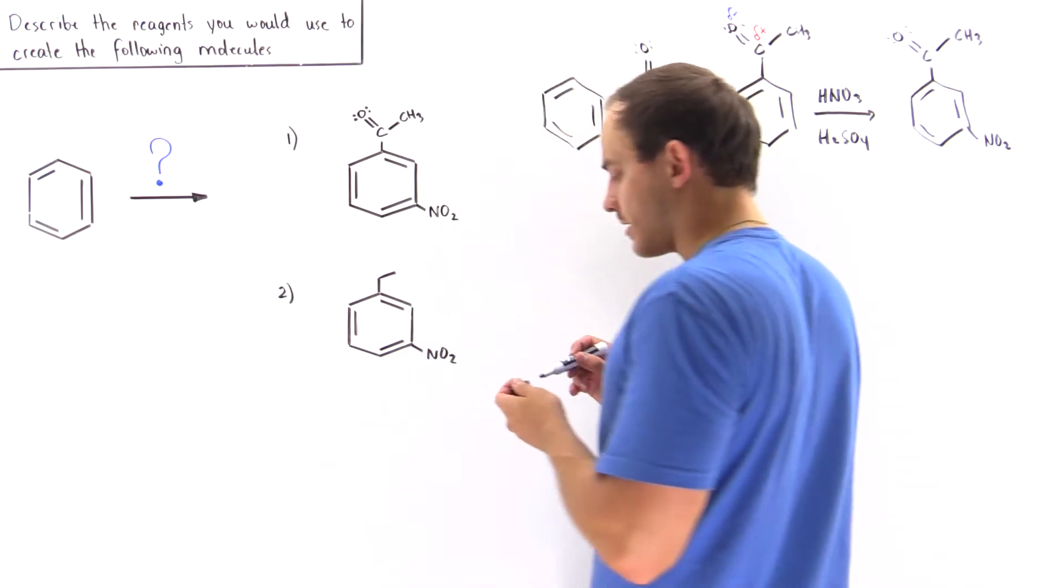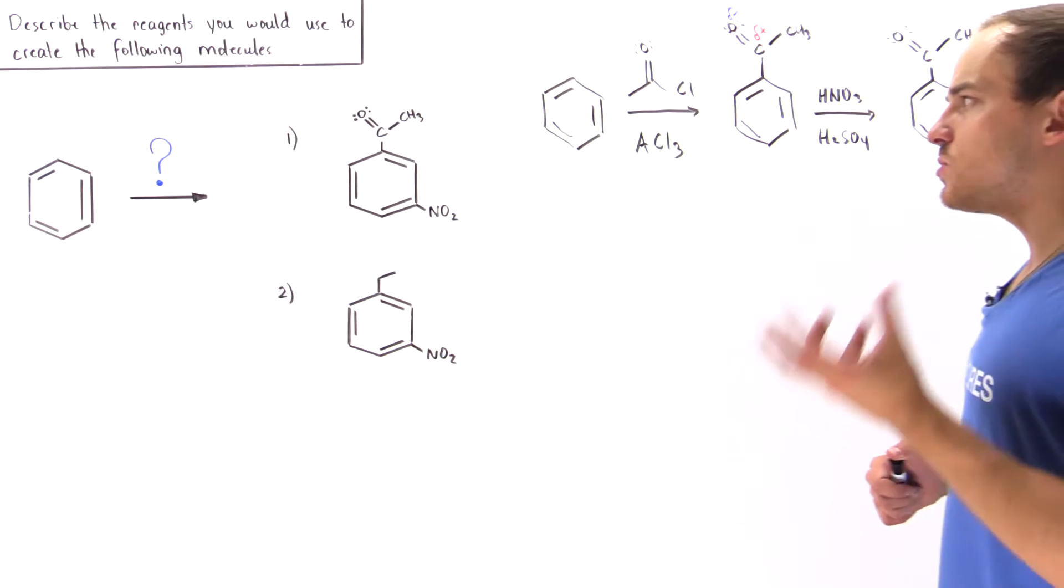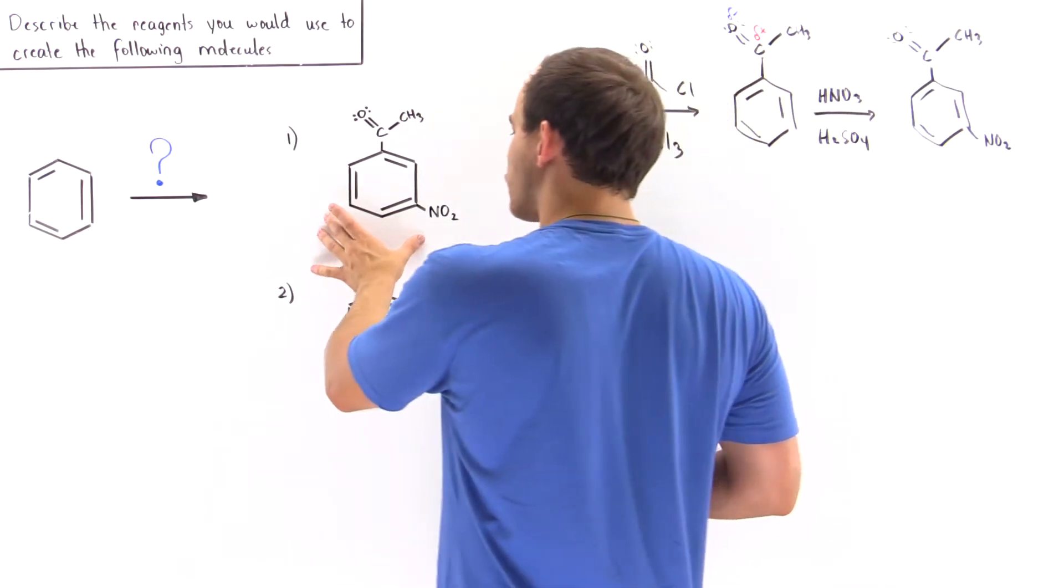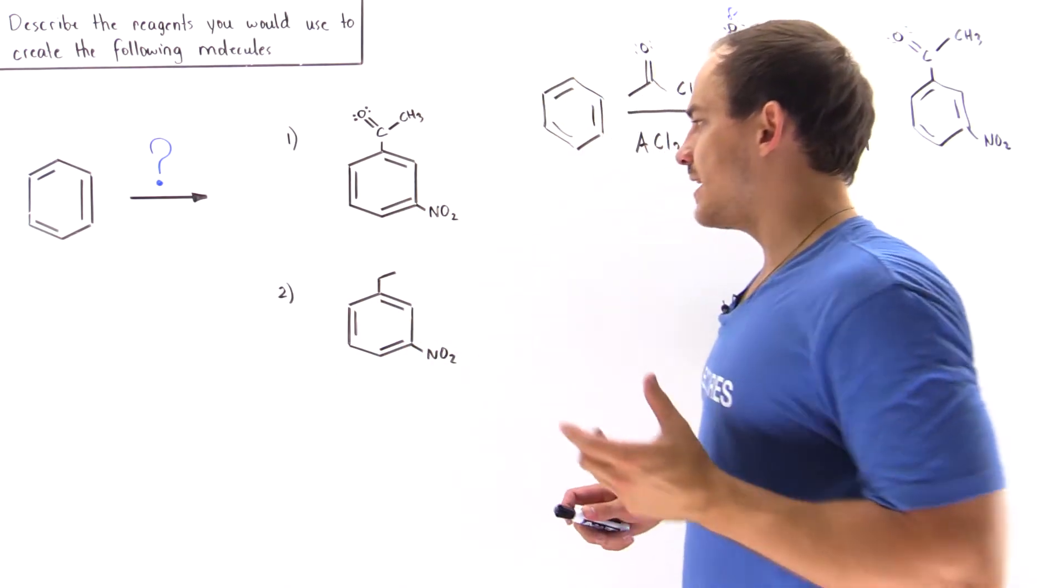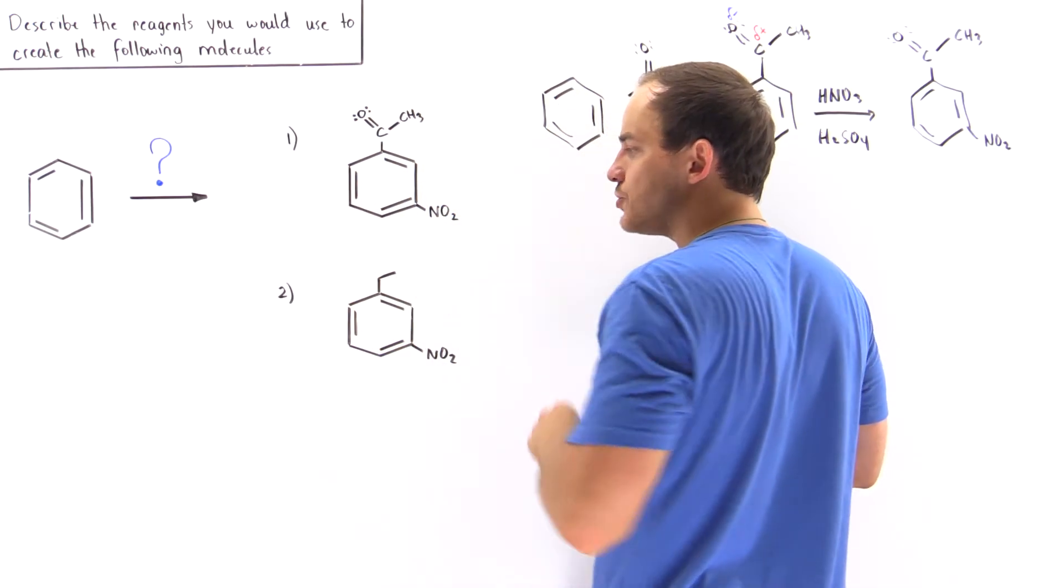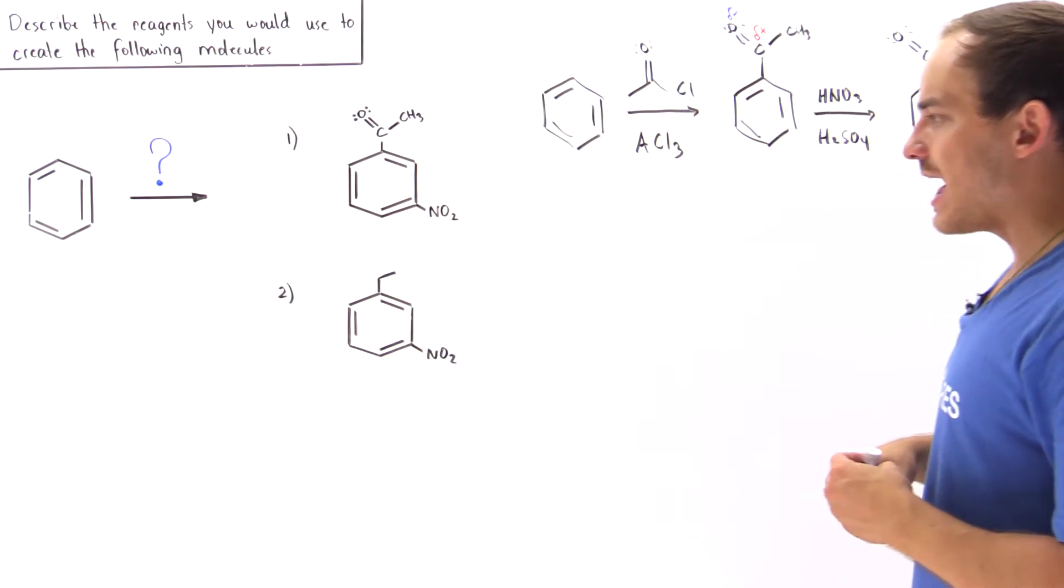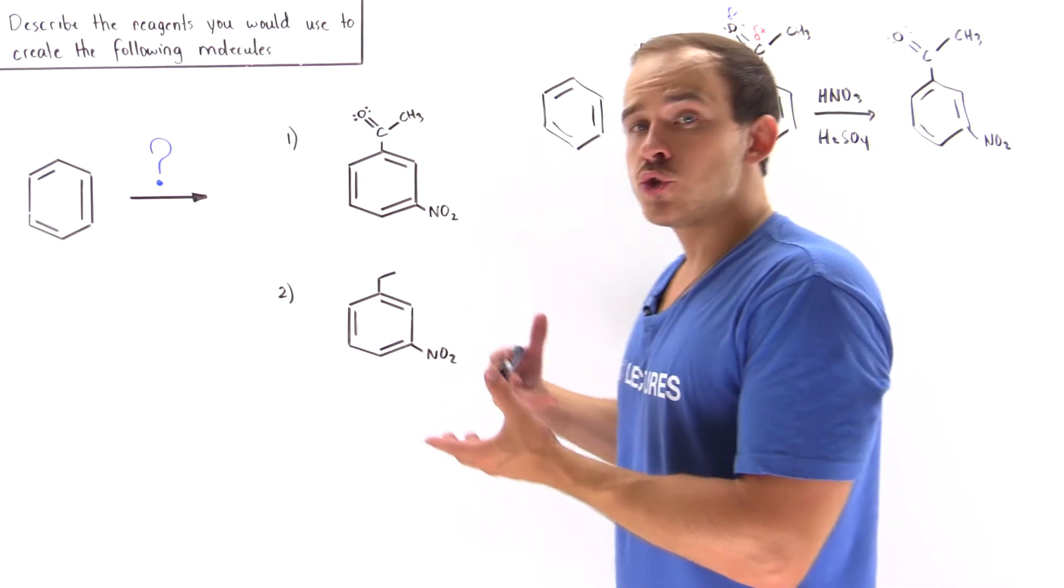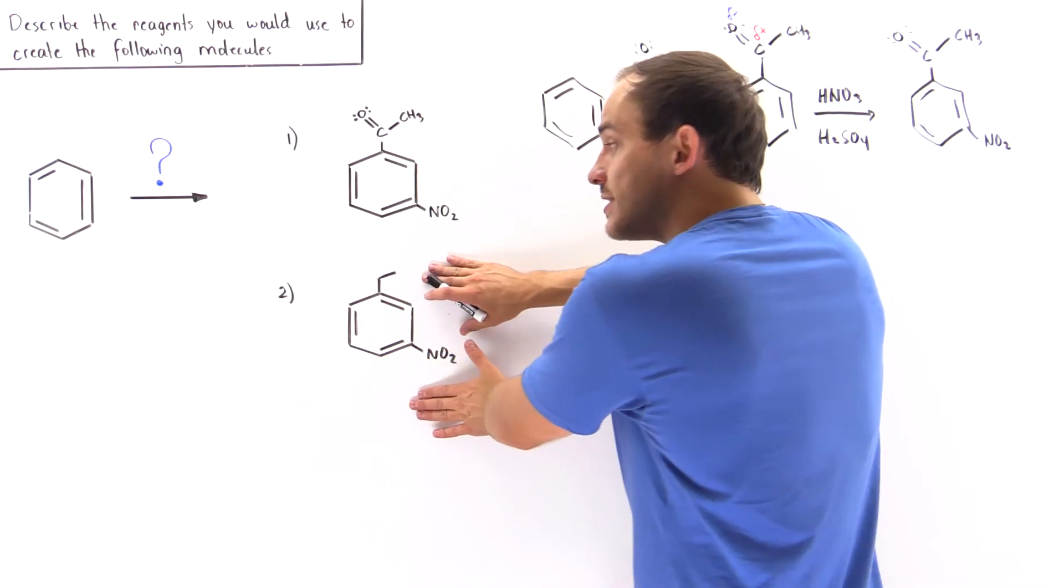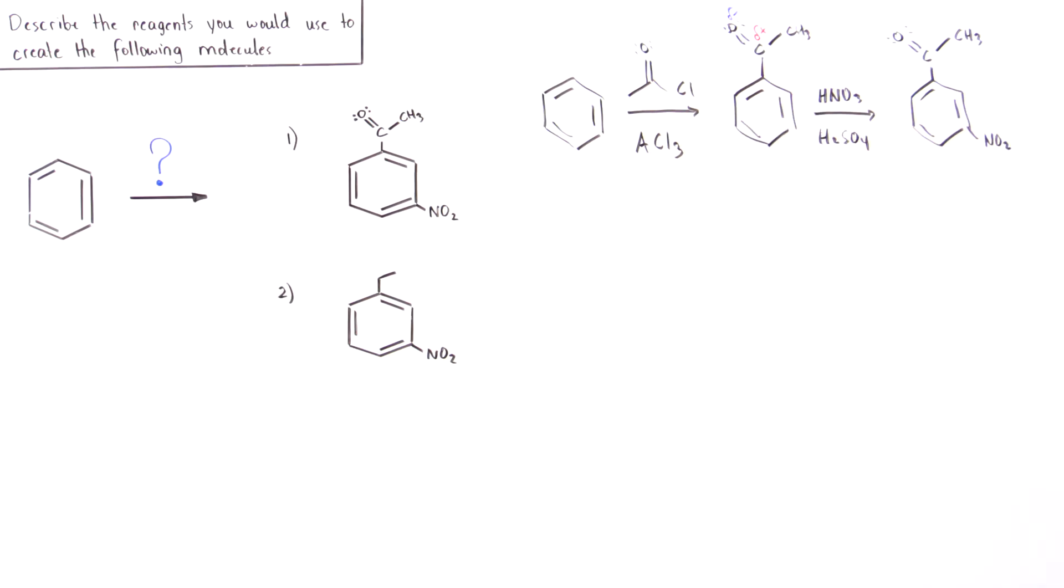Now let's move on to product number two. Product number two is almost the same as product number one. The only difference is we have, instead of the oxygen, two H atoms. So the oxygen is replaced with two H atoms.